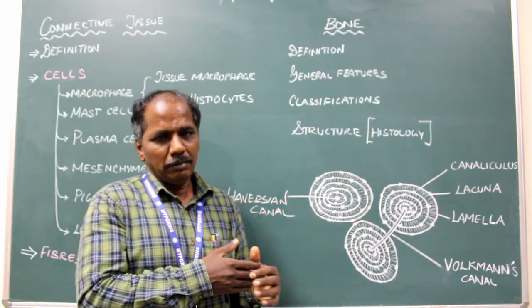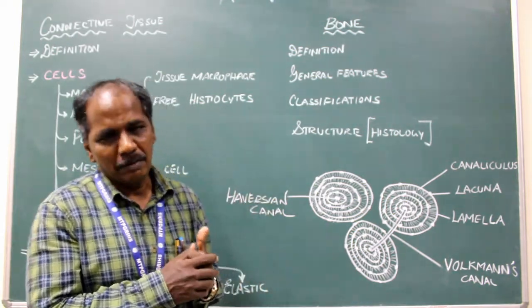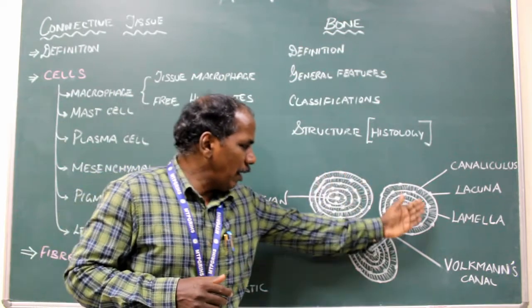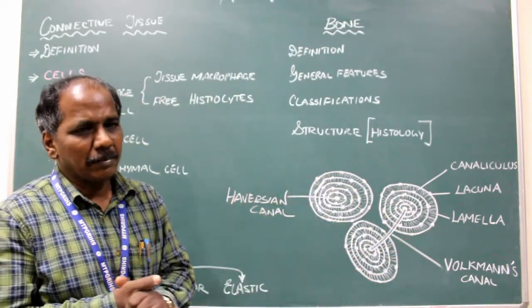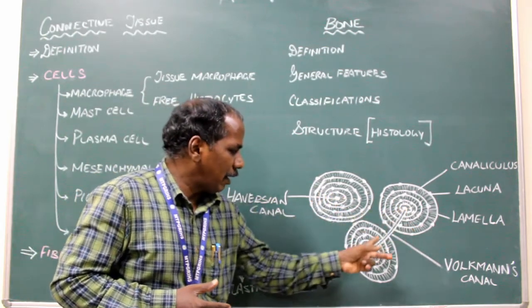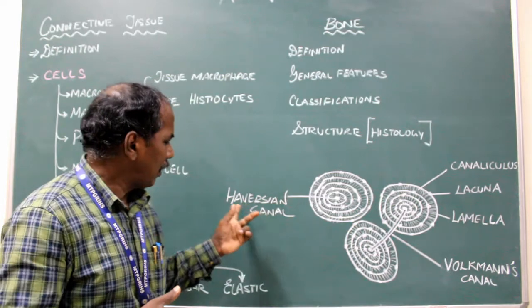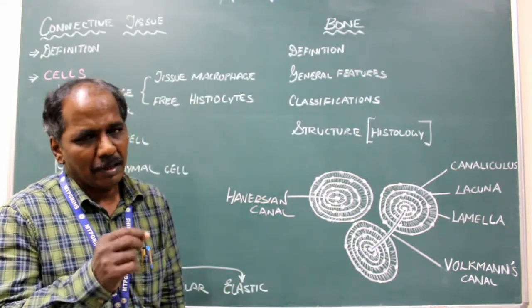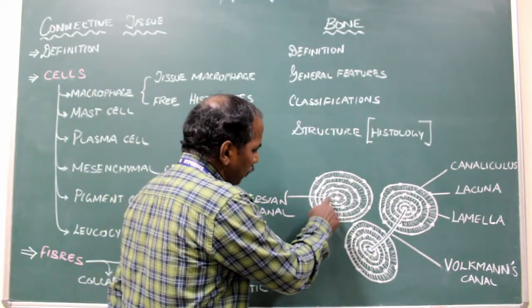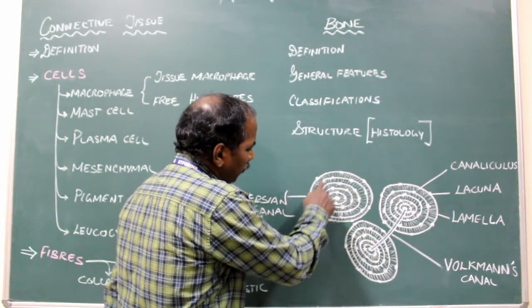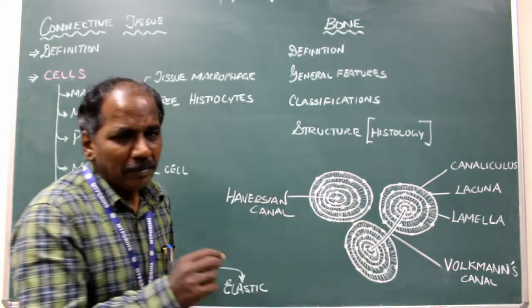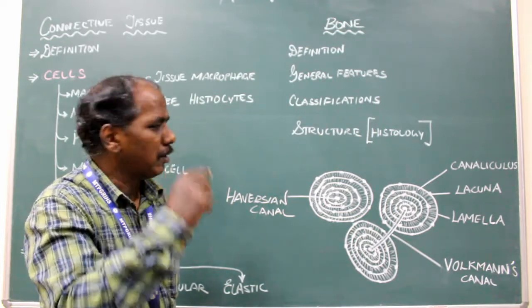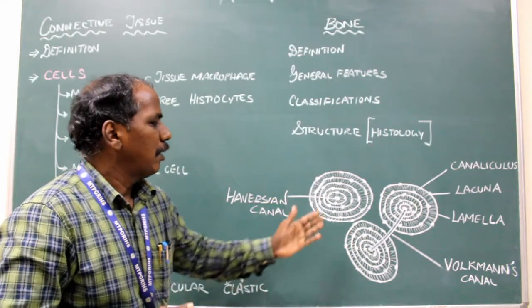Structure of bone or histology of the bone: If you take a piece of bone, keep it in a microscope and observe the structure, first point - it consists of a central canal known as Haversian canal. Surrounding the Haversian canal, there are variable number of plates arranged in concentric manner, circular. They are known as lamellae. Lamella is singular, lamellae is plural.